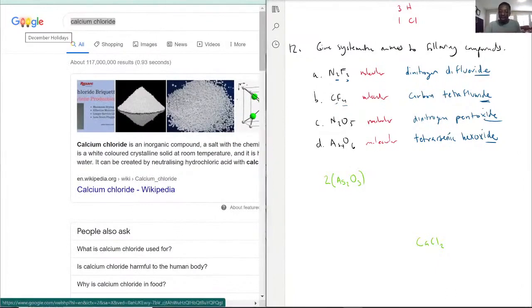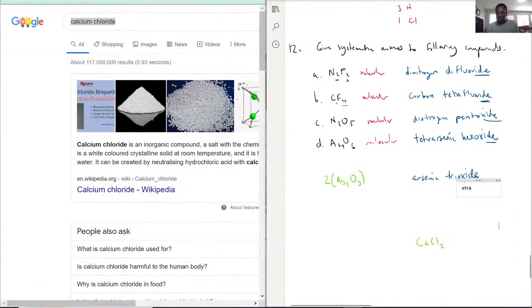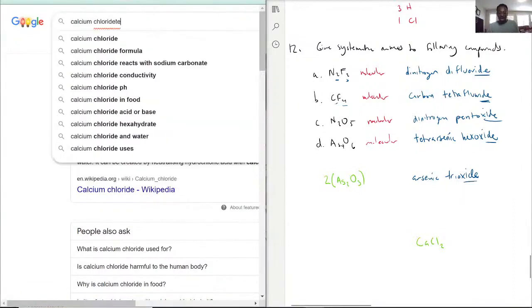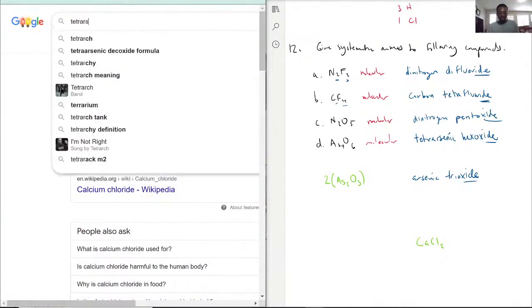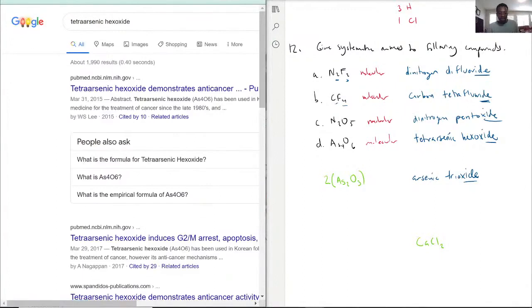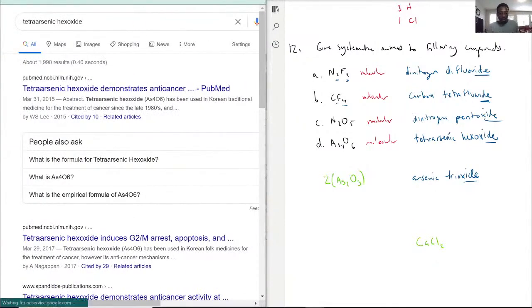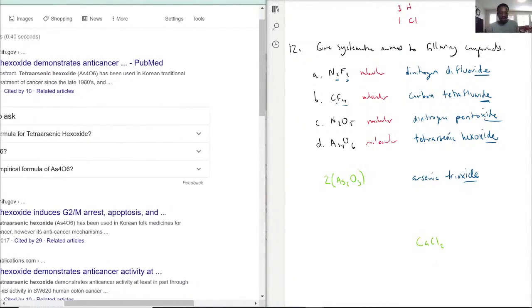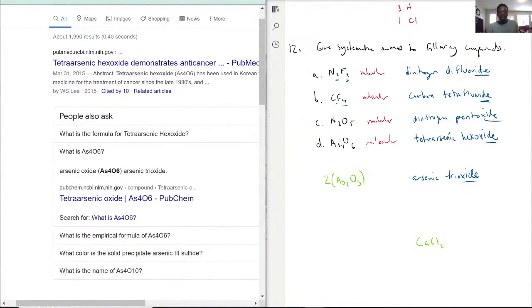But if I were to search up, so exactly right now we have arsenic trioxide, which literally breaks almost every rule we know so far about naming, which makes sense because it's a metalloid. It does what it wants. Unfortunately, this would be one of those you kind of have to memorize, but if I were to type in tetraarsenic hexoxide, it shows up. You see, As4O6. Yeah. So it's a real thing, but if I click this, it calls it arsenic trioxide.